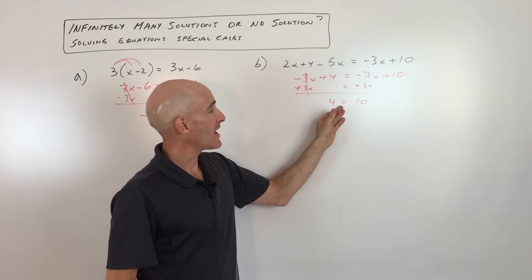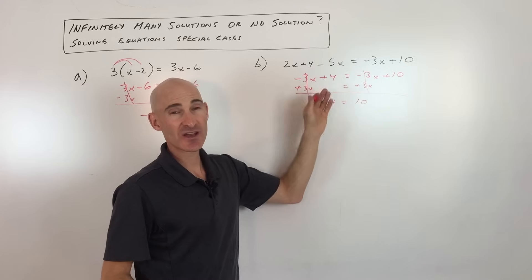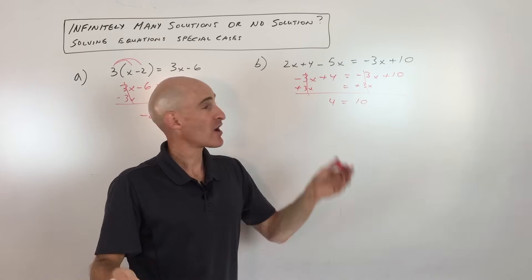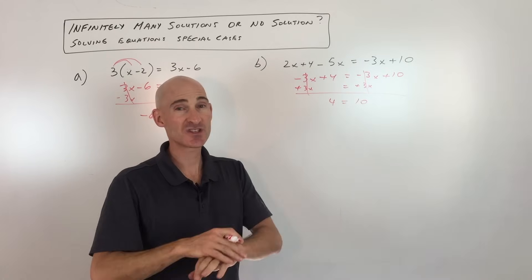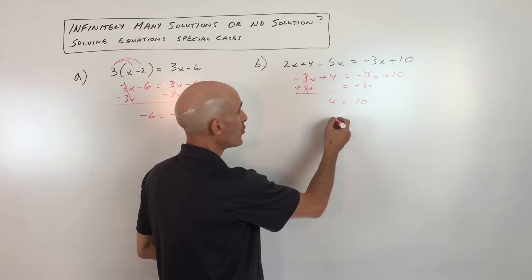What this means is that no matter what you put in for x, because these quantities are the same on both sides, the 3x, the negative 3x, they're going to cancel out regardless of what x is and that 4 will never equal 10. So it doesn't matter what you put in for x, this will never be true. So this means that this is no solution.